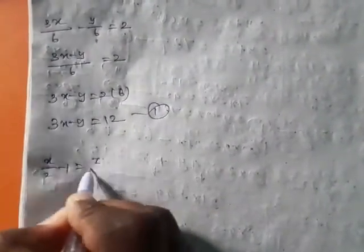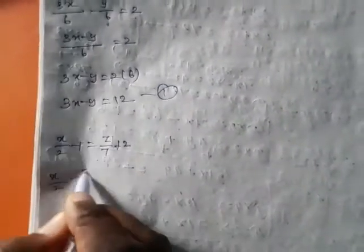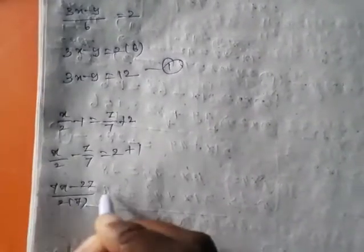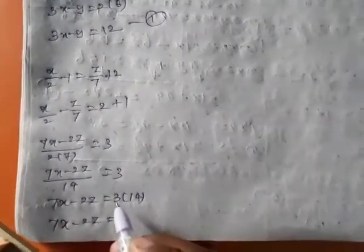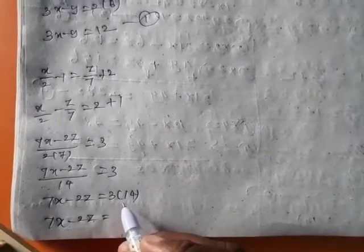Next, taking the second pair: x by 2 minus 1 equal to z by 7 plus 2. Variables one side first — take it: x by 2 minus z by 7 equal to 2 plus 1, which is 3. Cross product: 7x minus 2z divided by 14 equal to 3. So, 7x minus 2z equal to 3 into 14, which is 42. Because 3 into 10 is 30, 3 into 4 is 12, so 42.